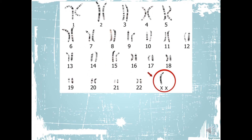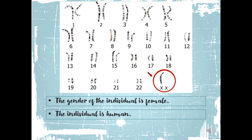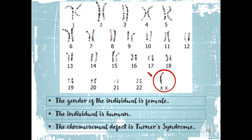Let's have the fourth karyotype. The gender of the individual is female, because the sex chromosome of this karyotype is XX. The individual is human. The chromosomal defect is Turner's syndrome. If you notice, instead of two sex chromosomes, there is only one — so the chromosomal defect in this particular karyotype is Turner's syndrome.